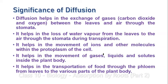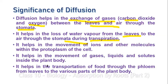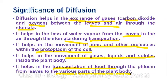What are the significances of diffusion? Diffusion helps in the exchange of gases in plants — they take in carbon dioxide and give out oxygen with the help of diffusion. This takes place between the air and the leaves through the stomata. Secondly, water vapor is also lost from the leaves through the stomata during transpiration. Thirdly, ions and other molecules move within the protoplasm of the cell by diffusion. It also helps in the movement of gases, liquids, and solutes inside the plant body, and in transportation of food through the phloem.